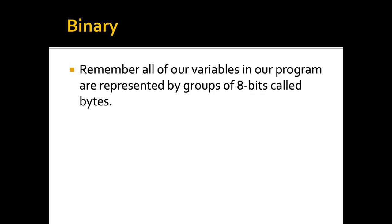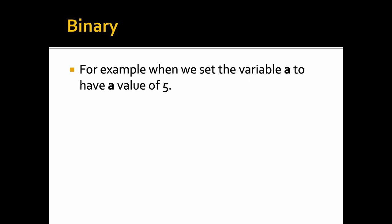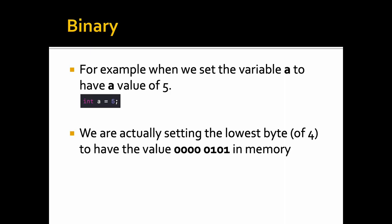All of our variables in our program are represented by groups of 8 bits called bytes. For example, when we set the variable a to have a value of 5 — i.e. a equals 5 — what we're actually doing is setting the lowest byte of the 4 bytes for an integer to have the value 0, 0, 0, 0, 0, 1, 0, 1 in memory.